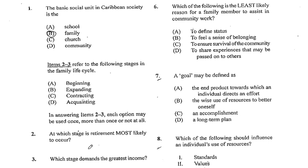At which stage is retirement most likely to occur? If your answer to number 2 is the contracting stage, you are correct. This is so because during the contracting stage of the family, the first child who would have reached adulthood would have left the home to start his or her own family, or would have gone off to start university or college. The parents would have gotten older, so this stage of the family continues until all of the children have left.